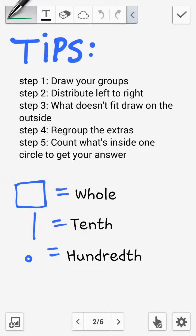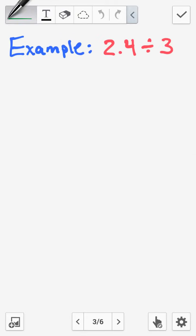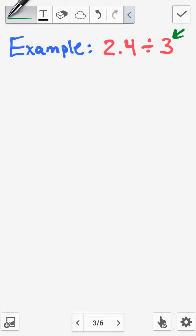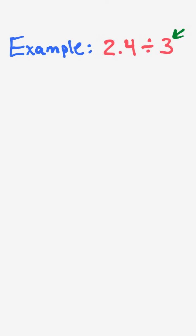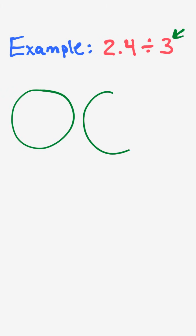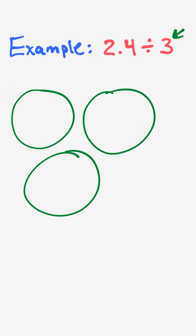Let's get started with some examples. Here we have two and four tenths being divided by three. The first step is to draw our groups. The divisor is three, so we draw three groups: one, two, and three.